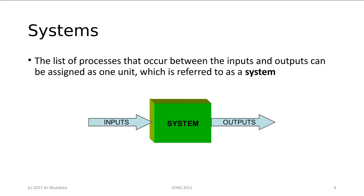All of the processing occurring between what went in and what came out — we collectively put that into one box that we call the system. In diagrammatic form, what we have is inputs, which are the signals coming in; the system, which is doing all of the processing of that signal; and the output, which is presumably another signal that we want.